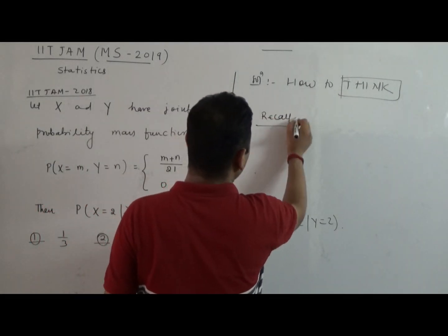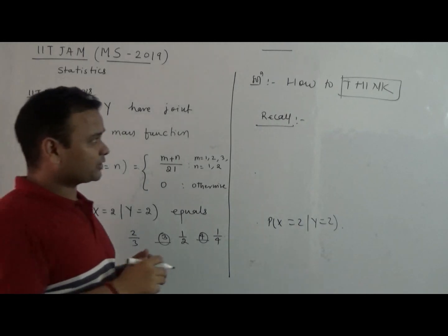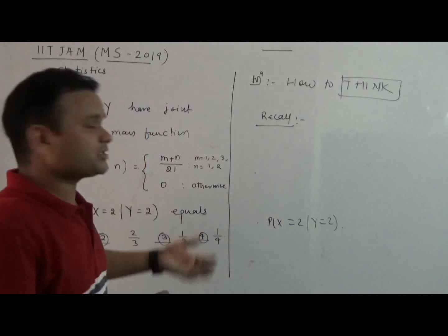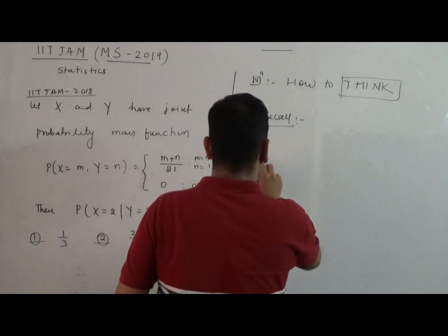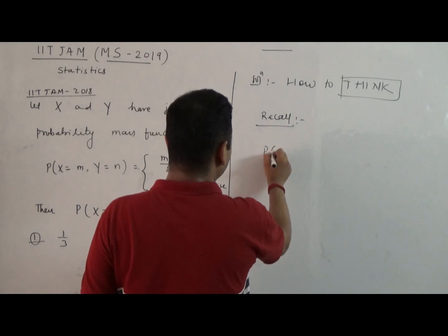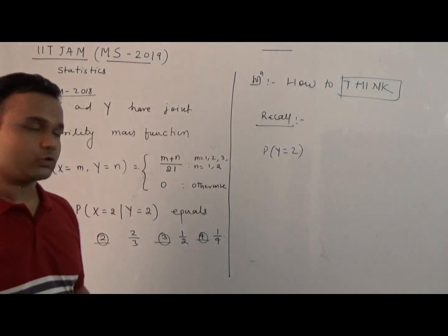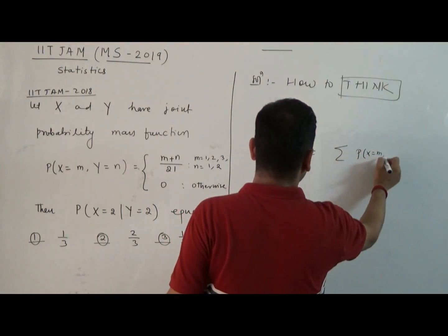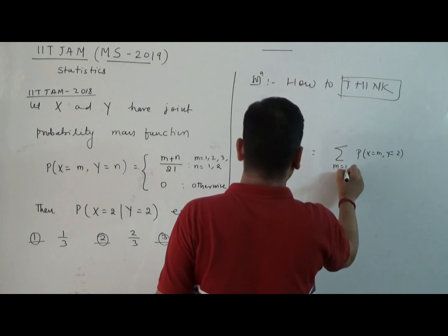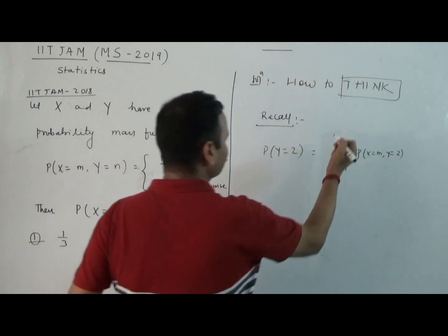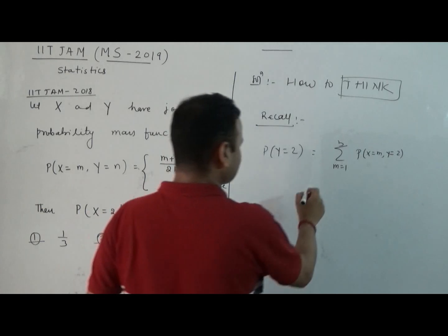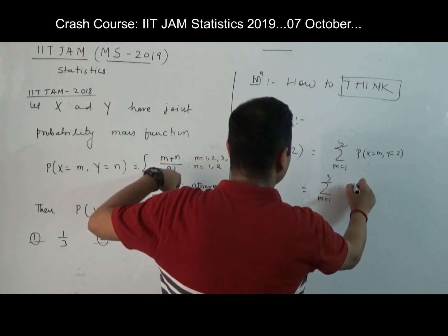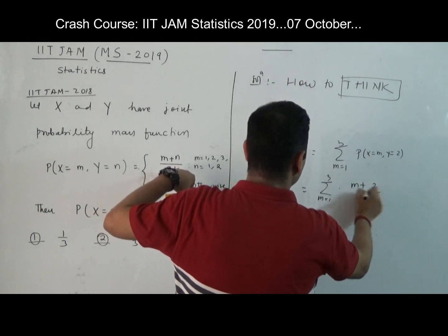Recall: what are those things you have to recall? When a joint mass function is given, what is the marginal? How are you going to find the marginal? Suppose I would like to ask, what is the probability of Y equal to 2 with the help of this? This is nothing but summation over X equal to M from M equals 1 to 3, with Y equal to 2. That's all. First you should know this. Put M equal to 1, 2, 3.